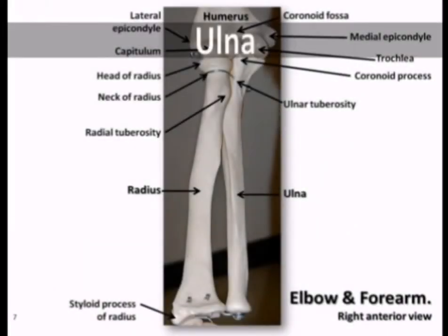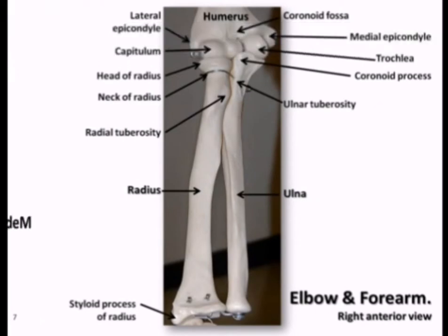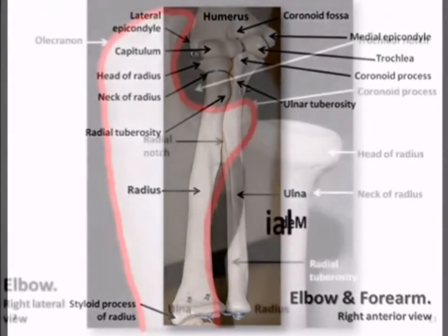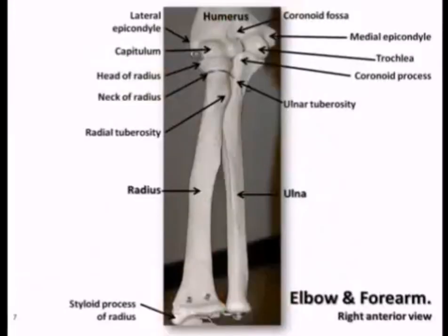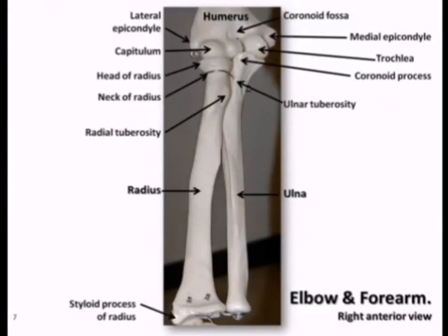The ulna is the largest of the two forearm bones and it's located on the medial side, which is your pinky or little finger side. It's easy to remember because the ulna resembles a crescent wrench in the lateral view. The radius is the smaller of the two bones and it's located on the lateral side, or the thumb side of the forearm.